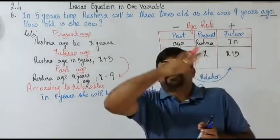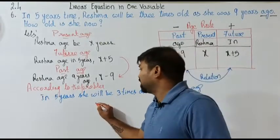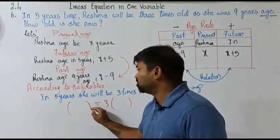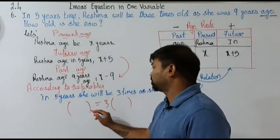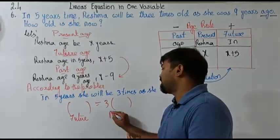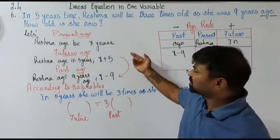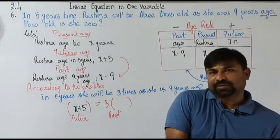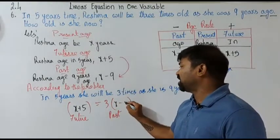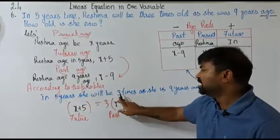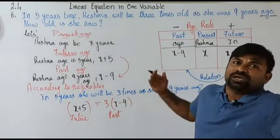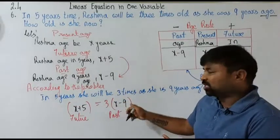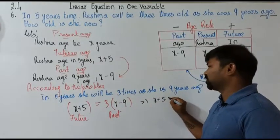He is comparing the past age and the future age. In five years she will be three times the past age. The future age is x plus 5, and three times the past age is 3 into bracket x minus 9. So the equation is: x plus 5 equals 3 times x minus 9.